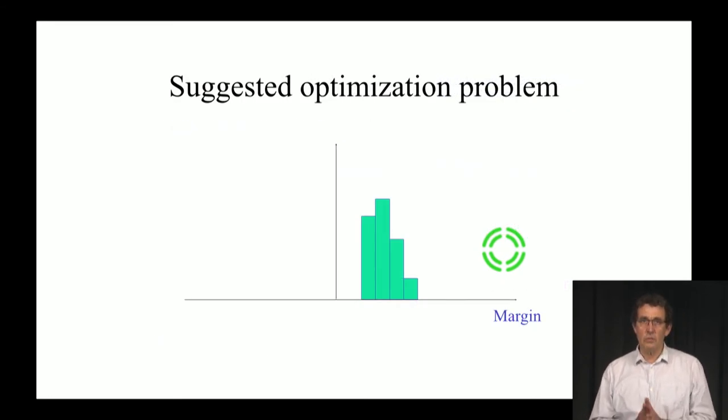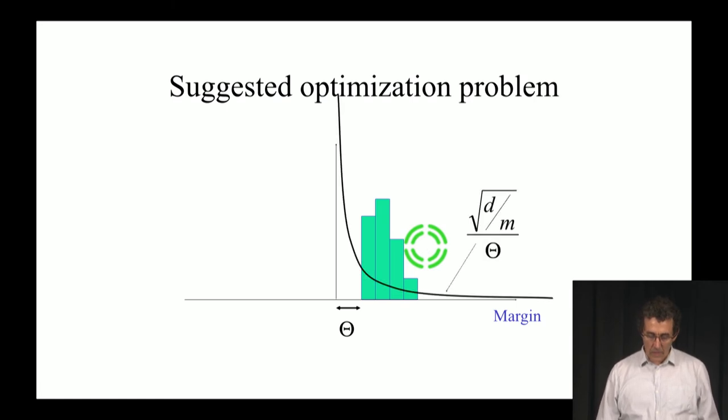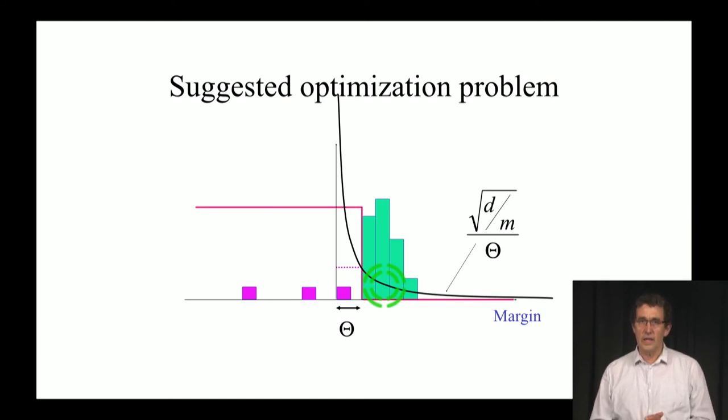This suggests an optimization problem. Suppose we have our data that has some margin, and then we want to maximize the margin, because we want the one over theta to be small, but we also want to have a small number of examples that are below the margin. This is a combined problem where we have the number of examples that are below theta, and we're trying to make theta as big as possible. This problem, unfortunately, is at least as hard as finding the best combination, the combination that minimizes the number of mistakes, and that problem is NP-hard. We really don't know how to do this in any effective way.